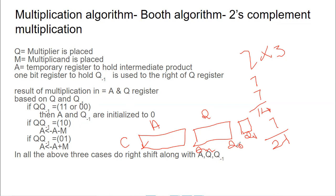Based on the value of Q-naught and Q-minus-1 you take decisions. If both are one or both are zero, you just do an arithmetic right shift. When Q-naught is one and Q-minus-1 is zero, you do A = A minus M — the multiplicand is subtracted from A. When Q-naught is zero and Q-minus-1 is one, you do A = A plus M. These are all the conditions to consider.